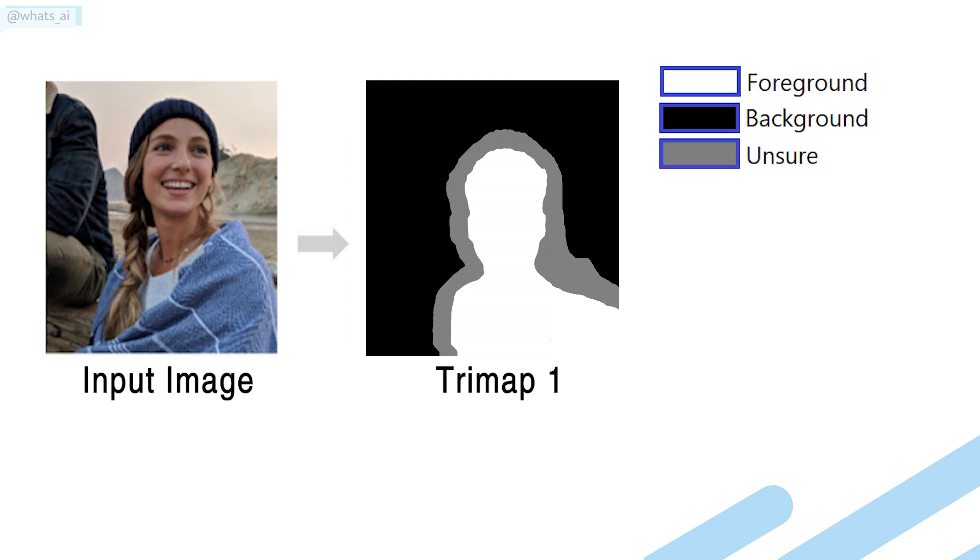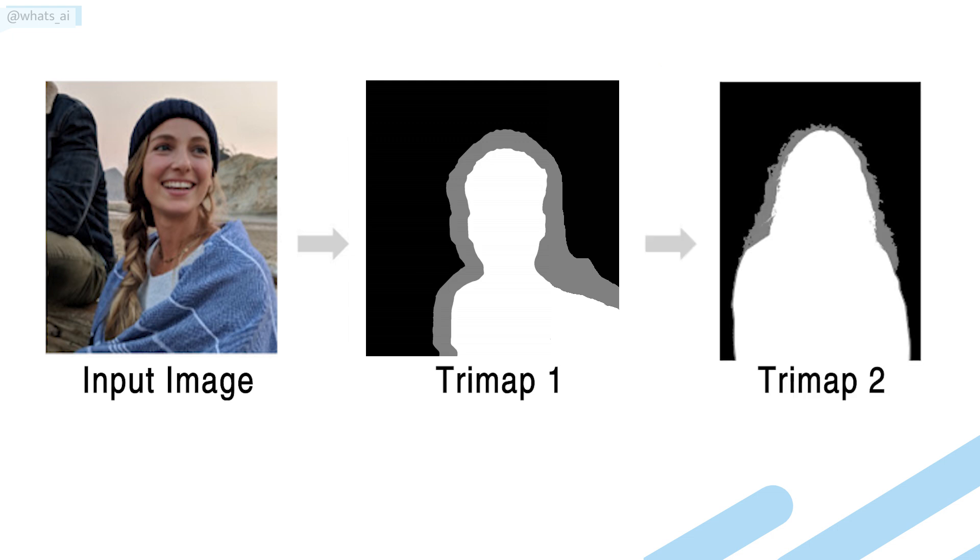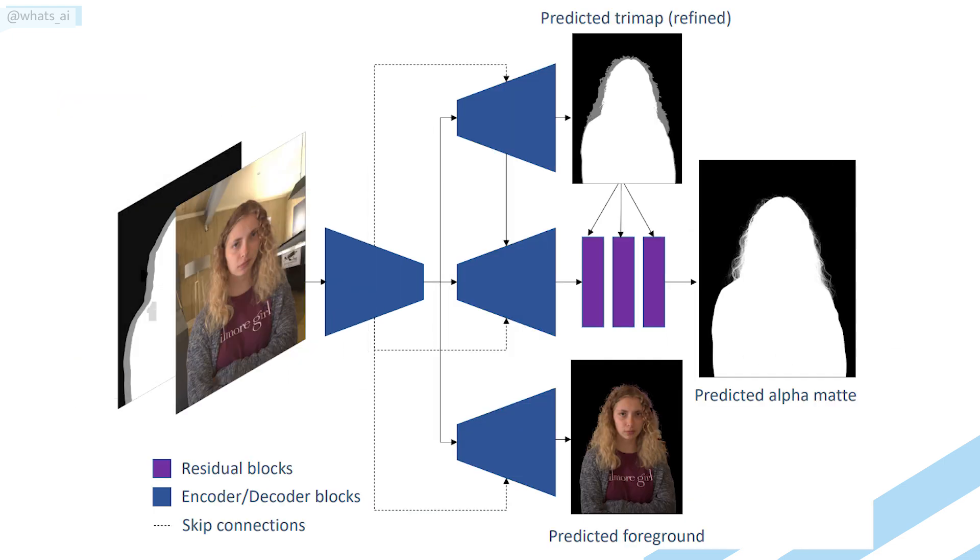This is called a tri-map, and it is found using a classic segmentation system trained to do exactly that, segment people in images. This tri-map is then refined using an encoder-decoder architecture as I already explained in a previous video if you are interested. It basically takes the initial tri-map, downscales it into condensed information, and uses this condensed information to upscale it again into a better tri-map. This may seem like magic, but it works because a network transforming this tri-map into code and code into a better tri-map was trained on thousands of examples and learned how to achieve that.